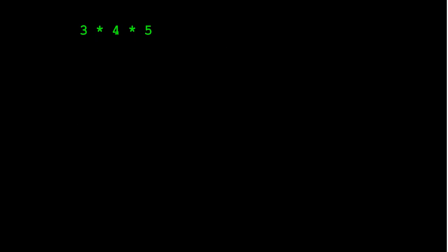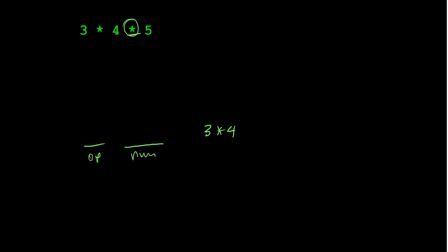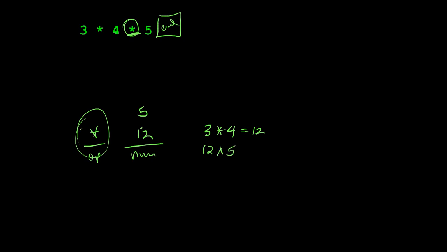The last example is 3 times 4 times 5. I push 3, push asterisk, push 4, and then reach the next asterisk. It has the same priority as the previous asterisk, so I process 3 times 4 first by popping. 3 times 4 is 12, pushed onto the num stack. Then I push the new asterisk and push 5. At the end of the string, the operator stack is not empty, so I process 12 times 5 by popping. 12 times 5 is 60, pushed onto the stack, and I output 60.